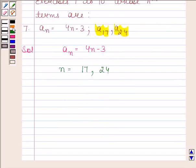By putting n = 17, we get a17 = 4(17) - 3. This equals 68 - 3, which equals 65.